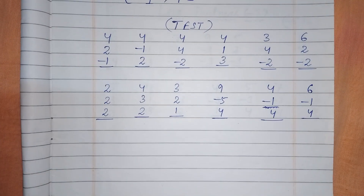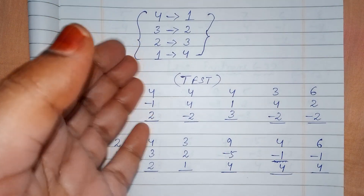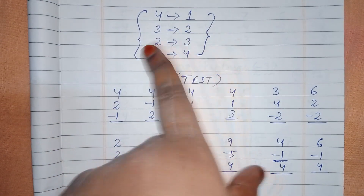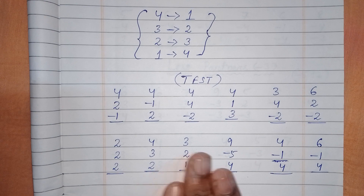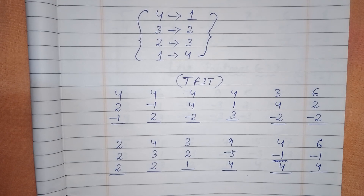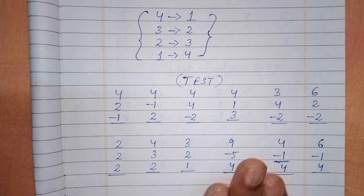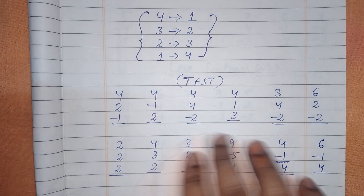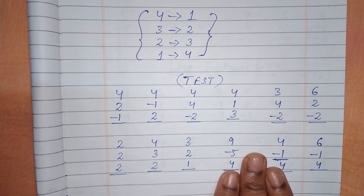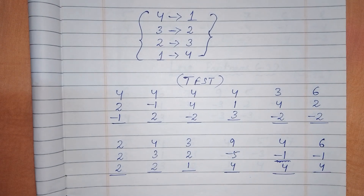I hope you understood the partners concept. There are four partners: partner of four is one, three is two, two is three, one is four. This was a test mixing all four partners. I've explained the finger concept and when and why to use partners on the abacus in previous videos. Please like, share, and subscribe to my channel. Thank you so much, bye!